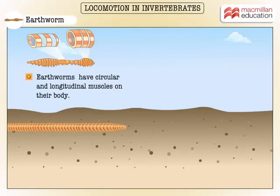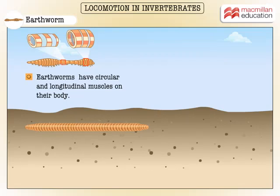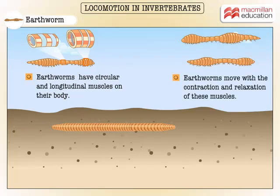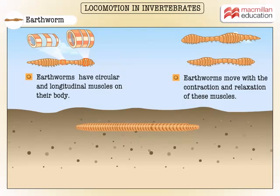Earthworms have circular and longitudinal muscles on their body. Earthworms move with the contraction and relaxation of these muscles. This is how they create a wave with their muscles to move through the soil.